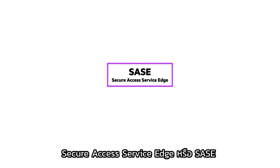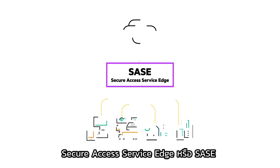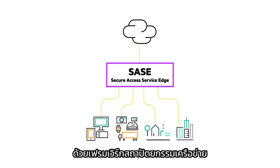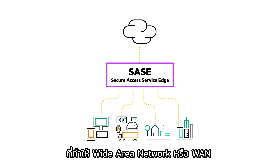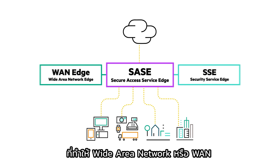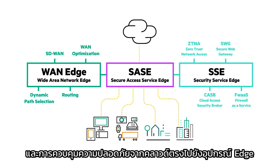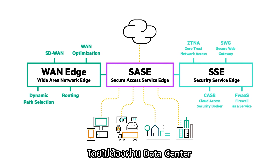Secure Access Service Edge, or SASE, does exactly that. It's a network architecture framework that delivers wide area network and security controls from the cloud directly to edge devices, without going through the data center.